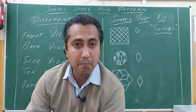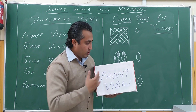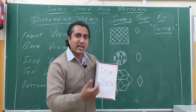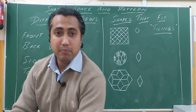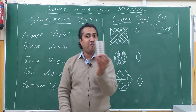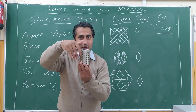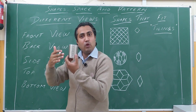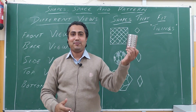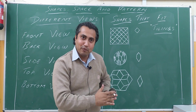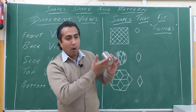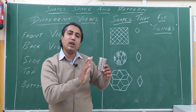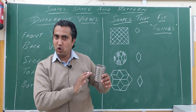If it was a box, the front view and side view would differ. But because this is a cylindrical figure, its front view, back view, and side view all look the same. So for a cylindrical shape, front view, back view, side view, top view, and bottom view — the top and bottom are both circles.